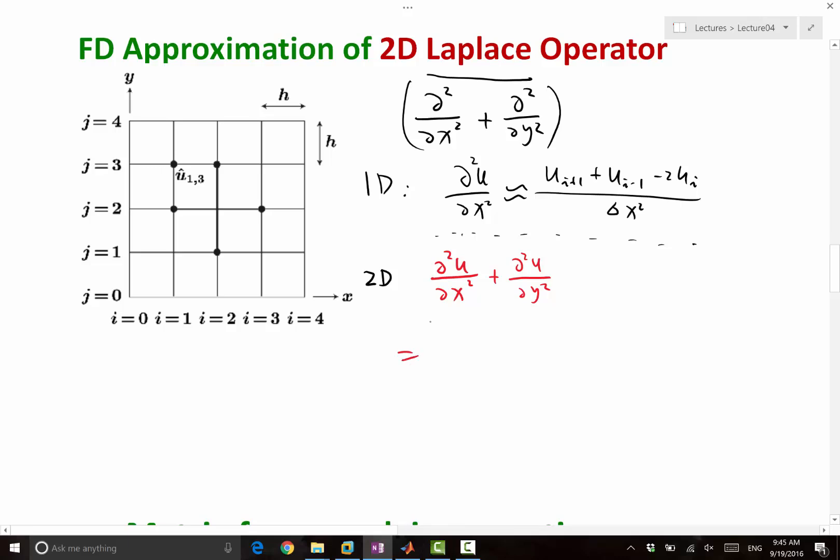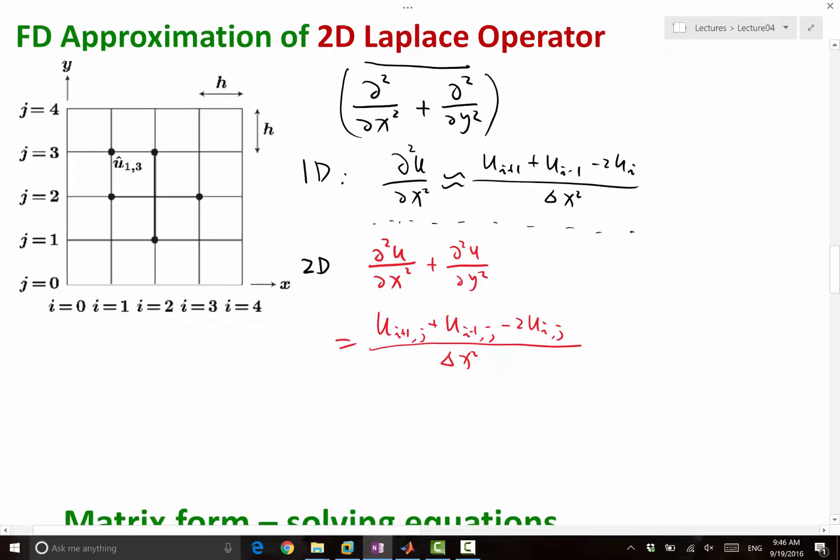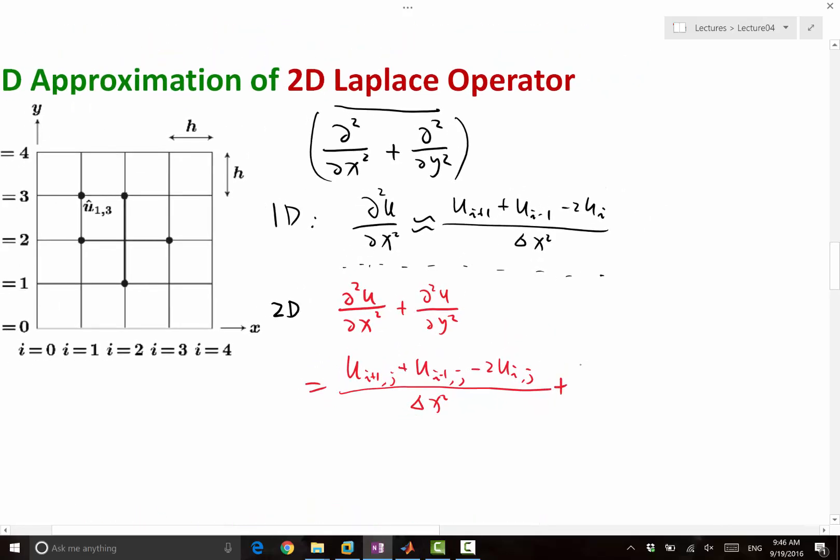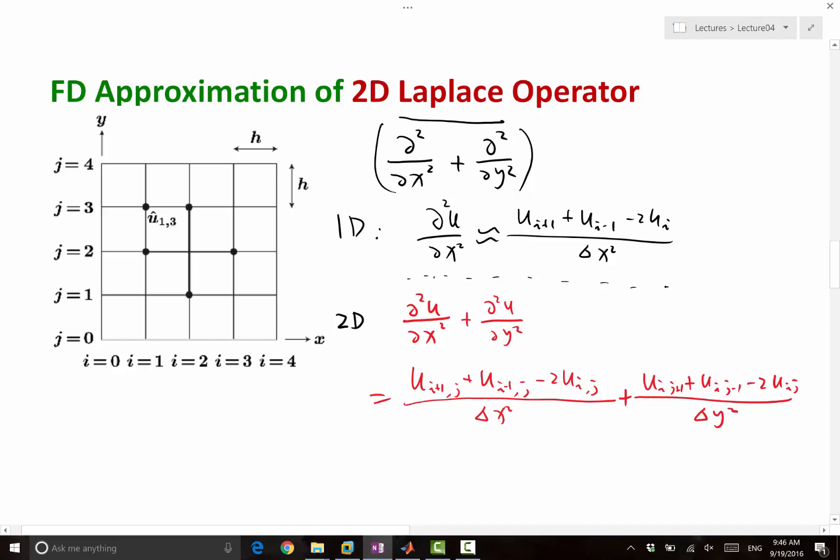Now we have more than the index i. We have ui plus 1 and j, plus ui minus 1 and j. So they are taking the finite difference operator at the same j to approximate the x derivative. And we also add this up with ui of j plus 1 plus ui of j minus 1 minus 2 ui j divided by now delta y squared. Where delta x is the distance between two adjacent x grid points, and delta y is the distance between two adjacent y grid points.